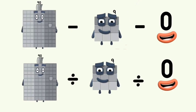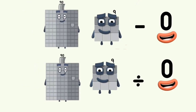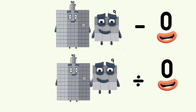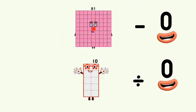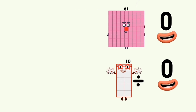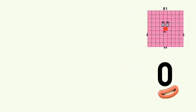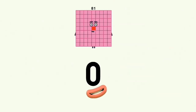90 minus and divided by 9 equals 81 and 10. 81 minus 0 and 10 divided by 0 equals 81 and 0.